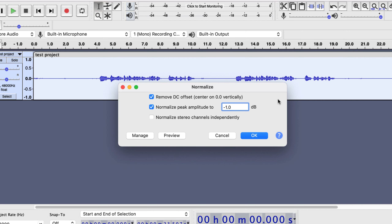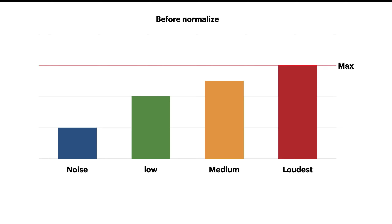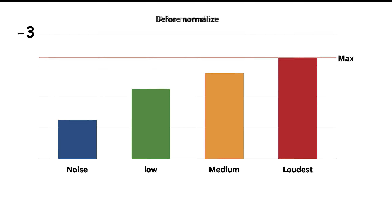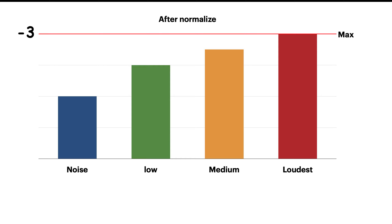Let's say I want to set the peak amplitude of normalization to minus 3. This is Audacity's normalization settings, but normalization in every software works in the same way. Let's assume this is the minus 3 dB in this illustration. After normalization, the loudest audio will reach minus 3, and the volume of every other part of the audio will increase the same amount as the loudest one.